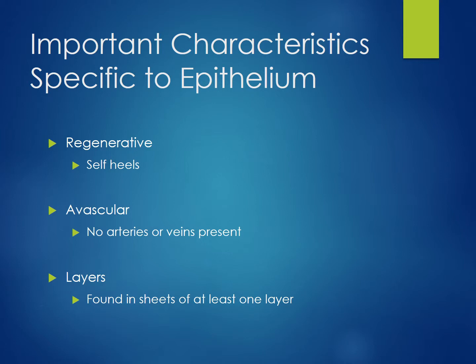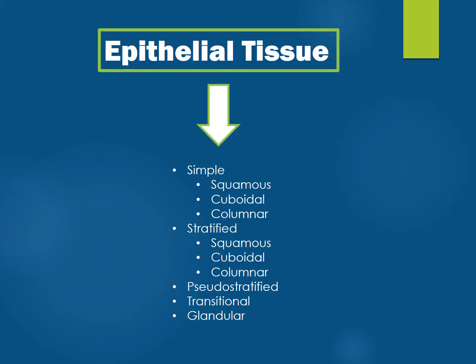to cover and line surfaces. Epithelial tissue always consists of at least one layer. Epithelial tissues cover external body surfaces, line body cavities, and line body passageways. Epithelial tissue functions to protect, secrete, and absorb. We will discuss examples of these functions as we cover the classification of various types of epithelial tissue.